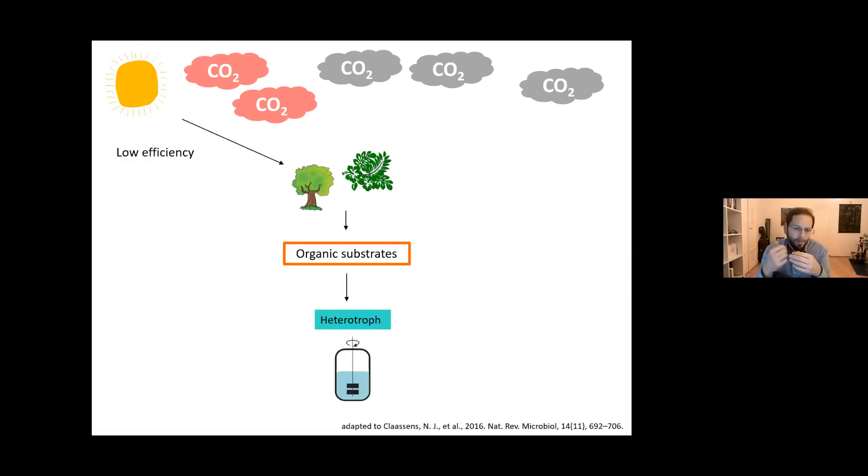Almost all biotech processes today rely on the use of organic substrates, which are typically derived from plant material by photosynthesis. Photosynthesis happens at very low efficiency, which is also the reason why biodiversity is threatened if you really want to scale such a technology up.